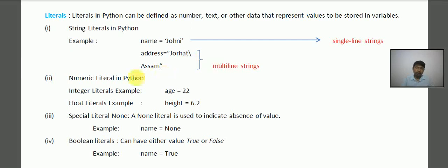The next, numeric literals in Python. So let's see the numeric literals. First one is an integer literal means the integers. That is age = 22. So as you can see here, integer 22 is stored. So this is the example of integer literal. The next one is float literal,